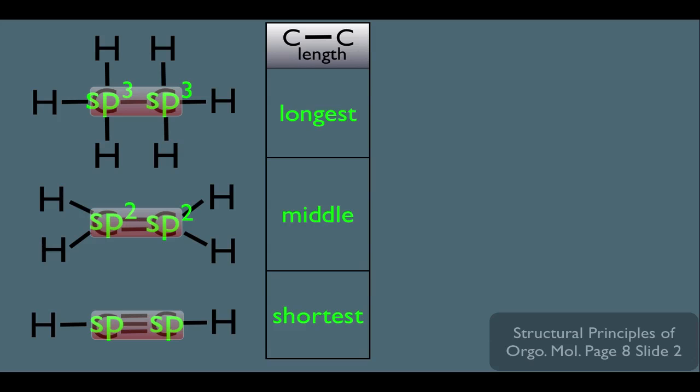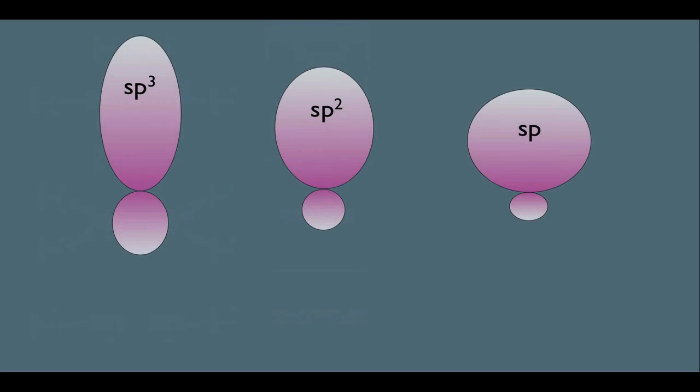But let's not just memorize this, let's use hybridization to understand why. If you were to line up side by side these carbons hybridized orbitals, they would look like this. Notice the sp3 hybridized orbital is longer, and the sp hybridized orbital on the right is more short and blunted.